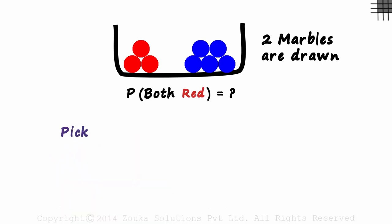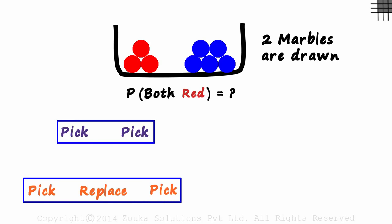We pick one marble and then pick another one. We pick and pick. What is the second possibility? We pick one marble, we place it back and then pick another one. Yes, pick, replace, pick. These are the two ways in which two marbles can be drawn.